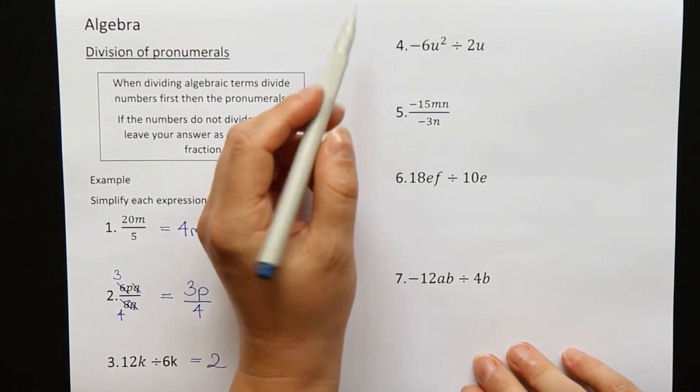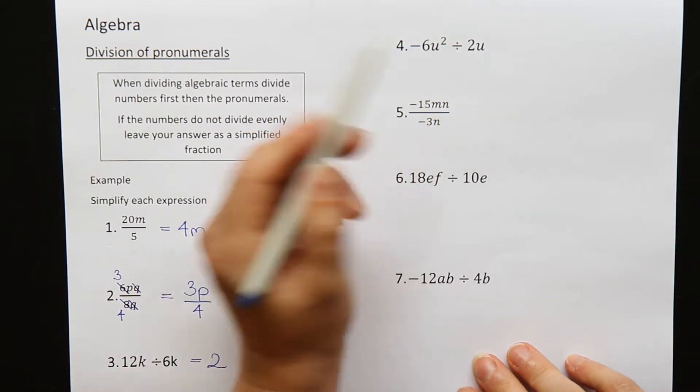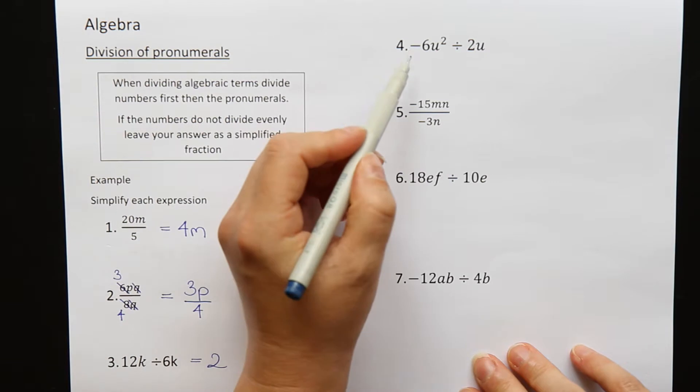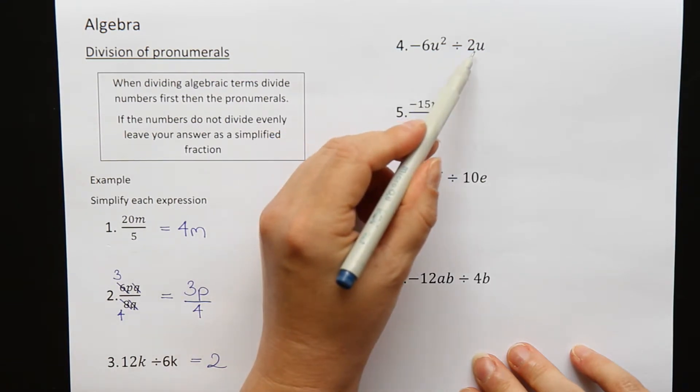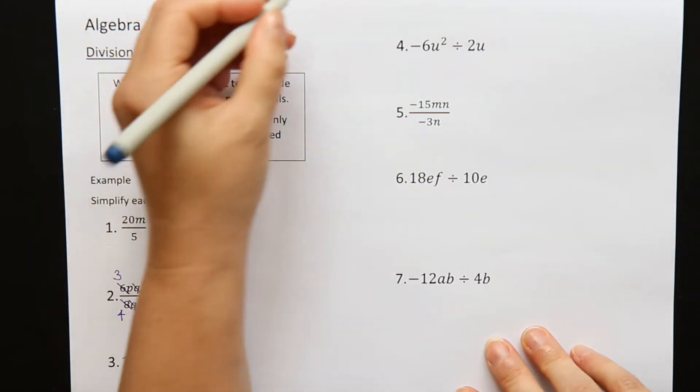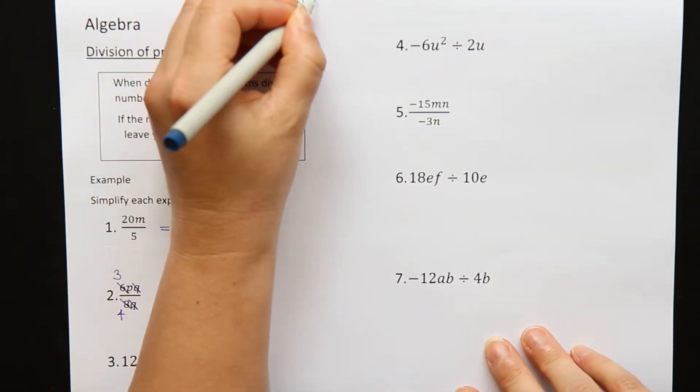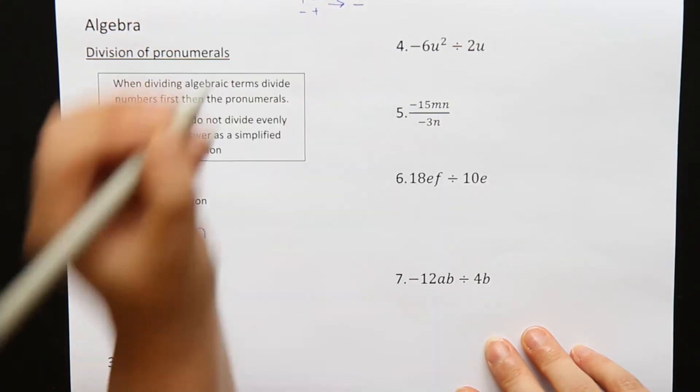Question four. Minus 6u squared divided by 2u. Let's divide our numbers. Minus 6 divided by 2. So remember, when you're multiplying and dividing, positive and negative numbers, or negative and a positive, positive and a negative, will give you a negative answer.